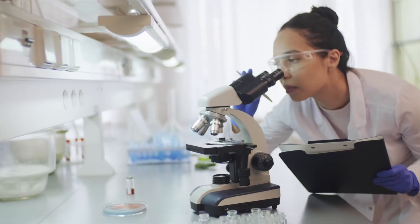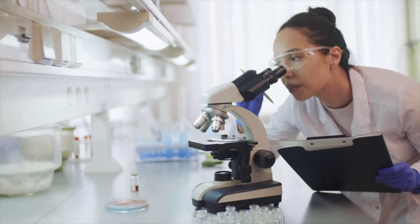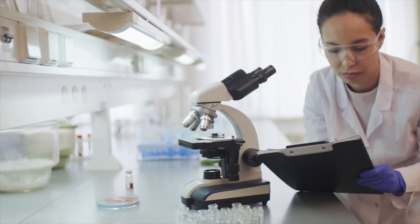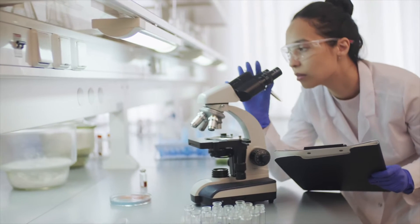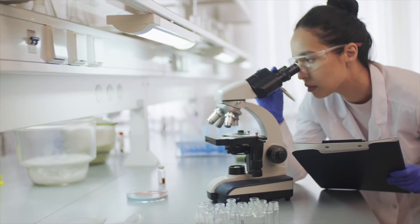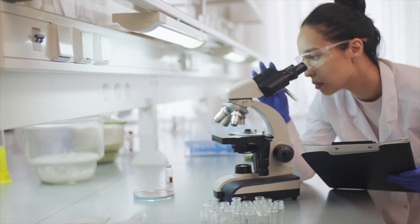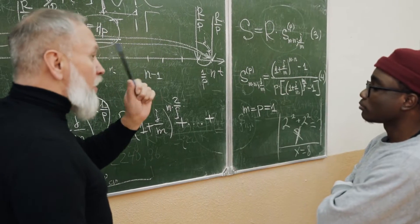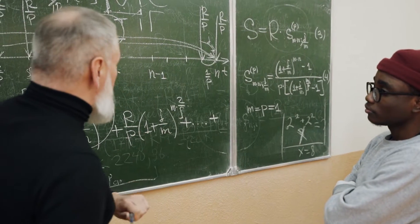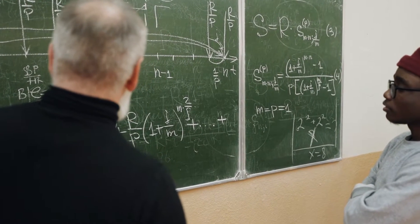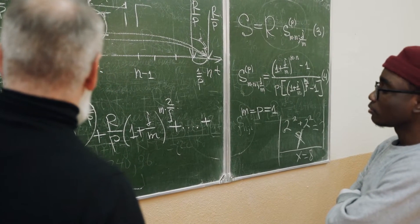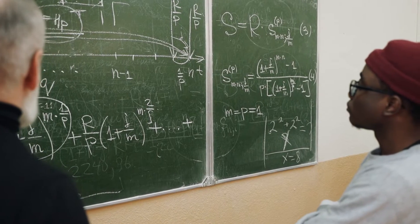The first thing about the curriculum is that BSc covers biology, chemistry, and physics. The BEng covers mechanical, electrical, civil, aerospace, and aeronautical engineering. The BSc is an engineering degree.